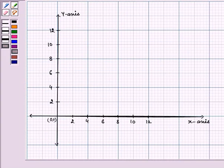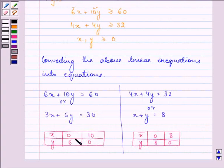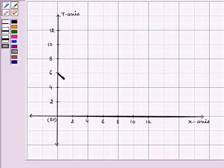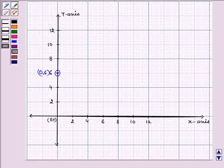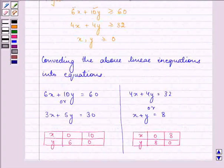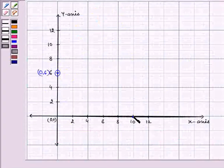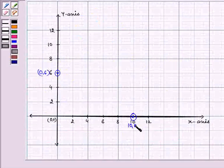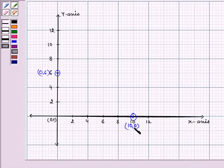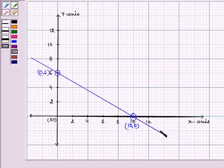Now, let us plot these points on the graph. We have when X is 0, Y is 6. That is 0, 6 and when X is 10, Y is 0. Let us join these two points to obtain a line representing the equation that is 3X plus 5Y is equal to 30.